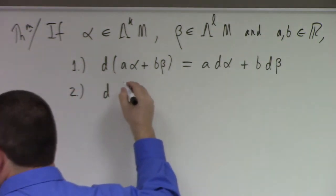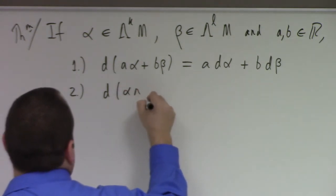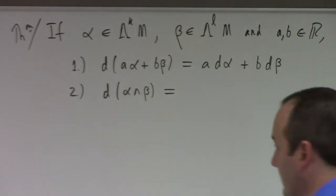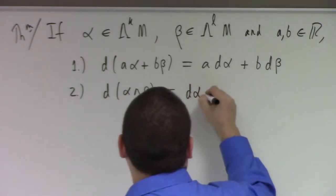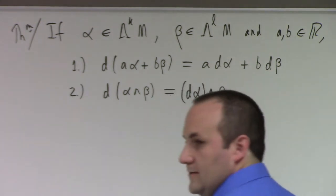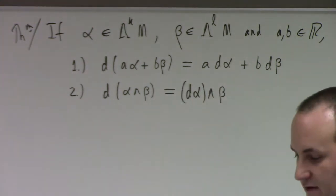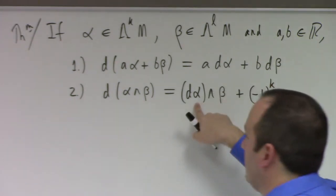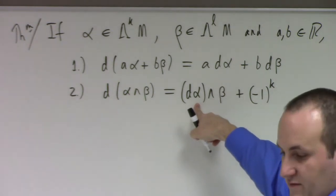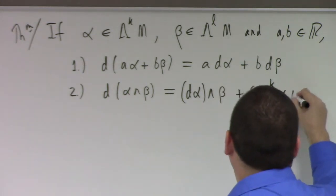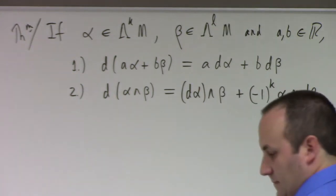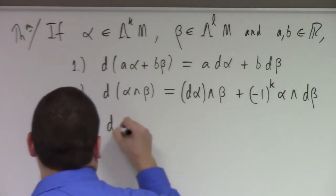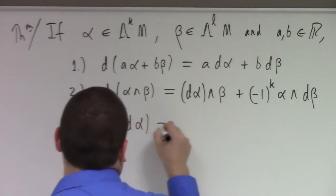Here's the more interesting one: the exterior derivative of the wedge product. There's a product rule, but it's a graded product rule. Property two: d(alpha wedge beta) = d(alpha) wedge beta + (-1)^k alpha wedge d(beta), where k is the degree of alpha. Property three: the exterior derivative of the exterior derivative is zero — d squared equals zero.